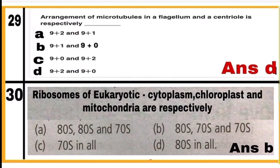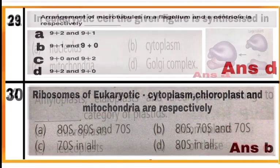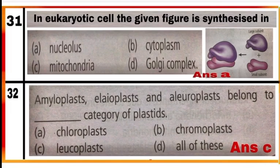Question 30: Ribosomes of eukaryotes in the cytoplasm, chloroplasts, and mitochondria are respectively option B. In the cytoplasm the ribosome is 80S; in chloroplasts it is 70S; and in mitochondria it is 70S. Here S is the Svedberg unit.